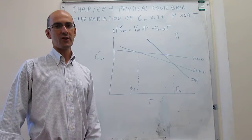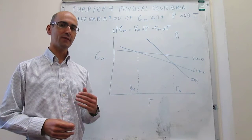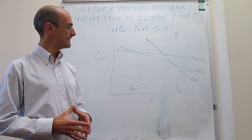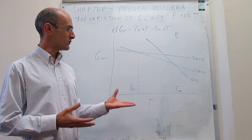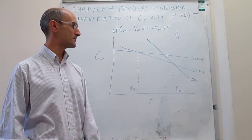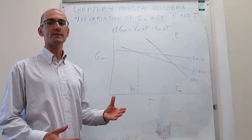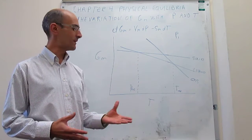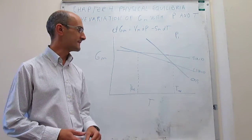In this video, we continue to talk about how the molar Gibbs energy changes with pressure and with temperature. Our starting point is a graph of the molar Gibbs energy with respect to temperature, in which we can see the three lines for the three phases of a substance and how they appear in the diagram. This tells us what the stable phase of the substance is at any particular temperature, and for this the pressure is constant.